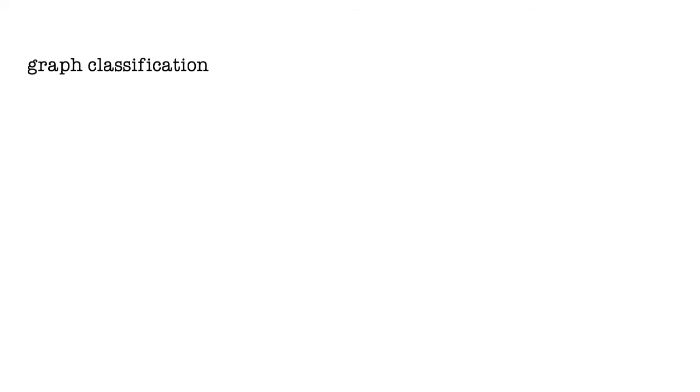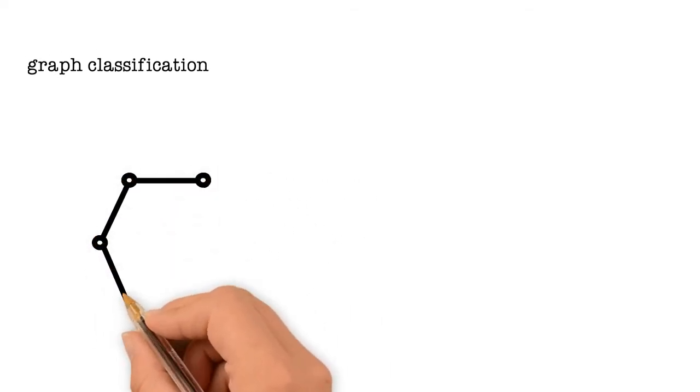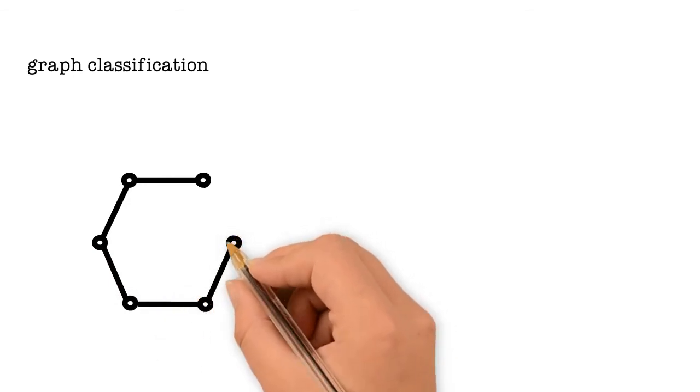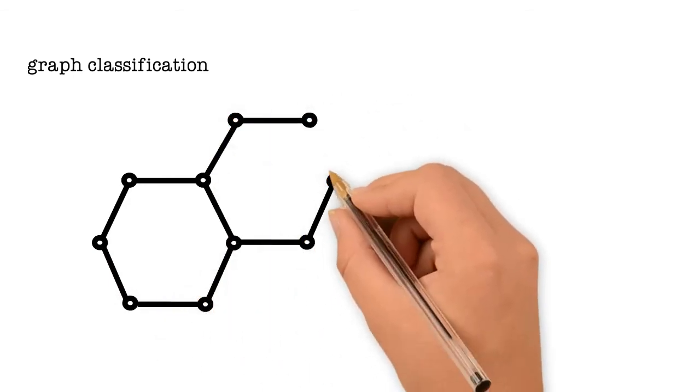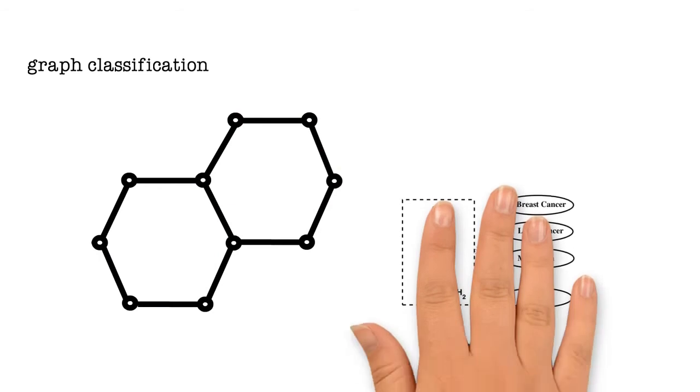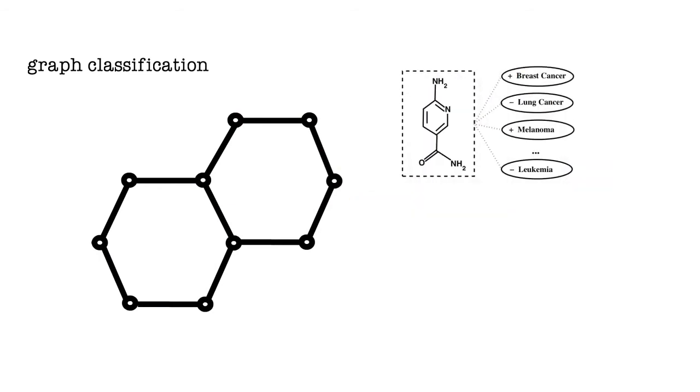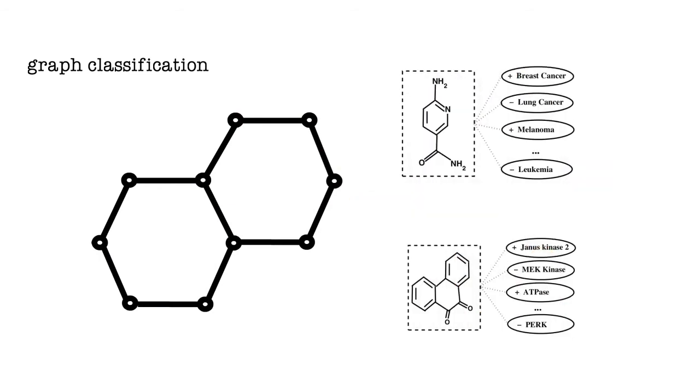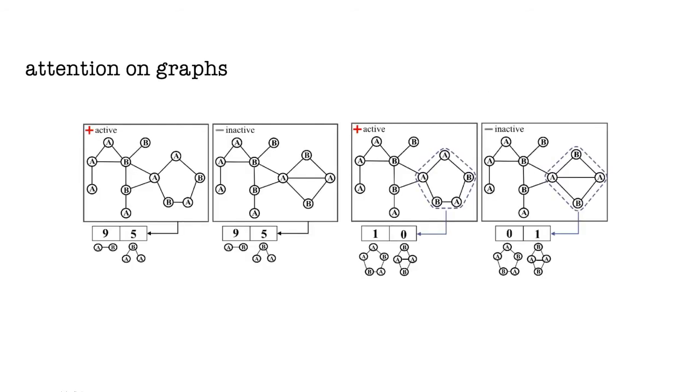We apply attention to the problem of graph classification. In chemoinformatics, for instance, molecules can be represented as graphs, and we want to train a classifier that can distinguish between graphs that have anti-cancer properties, graph at the top, and those that do not, the graph at the bottom.